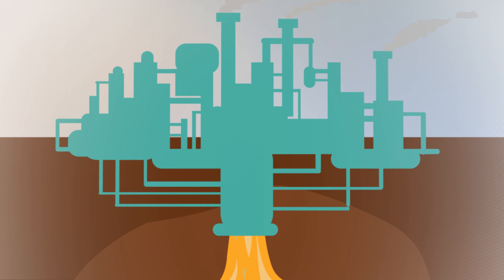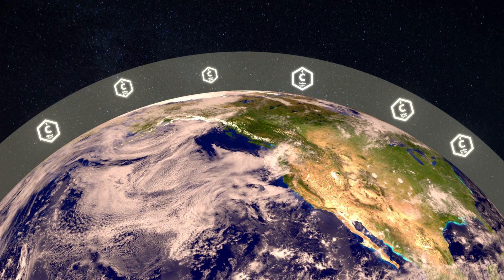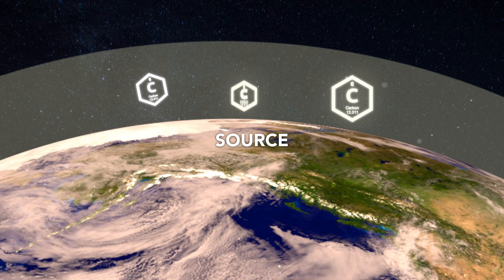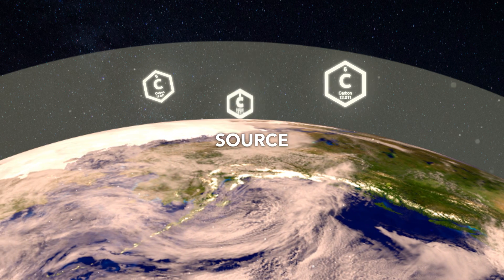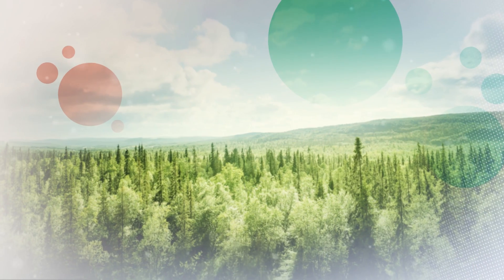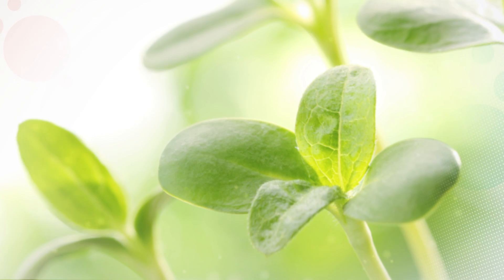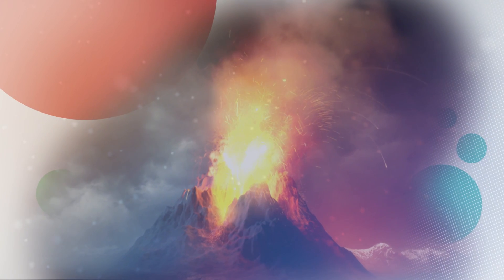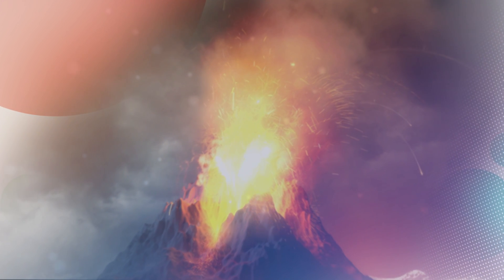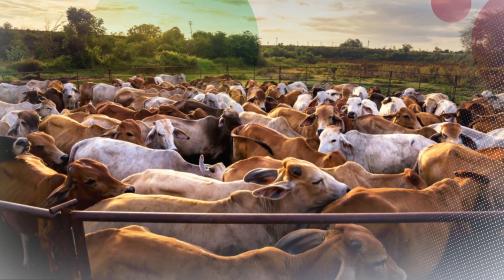Fossil fuels are part of the long-term carbon cycle, as they were formed through anaerobic decomposition when the bodies of plants and animals were buried millions of years ago. In this course, we're primarily concerned with atmospheric concentrations of carbon dioxide, so we'll call anything that adds carbon to the atmosphere a source, and anything that removes carbon from the atmosphere a sink. Carbon sinks include forests, grasslands, oceans, and soils. Natural sources of carbon include respiration from plants, wildfires, decomposition, and volcanoes. Man-made or anthropogenic sources include the burning of fossil fuels, deforestation, and certain agricultural practices, including livestock production.